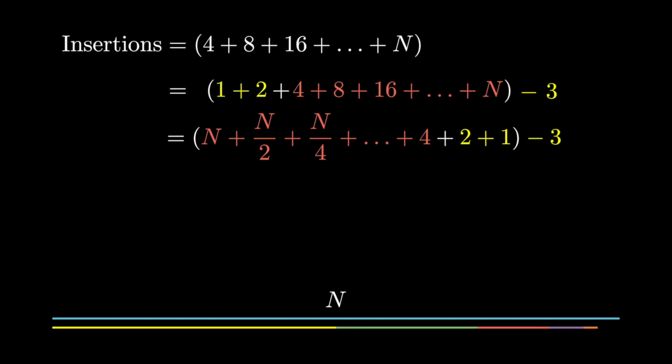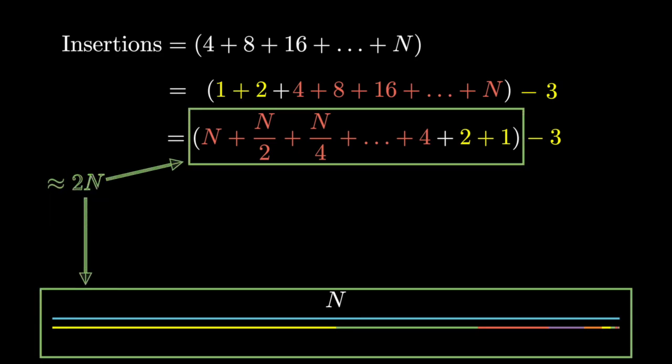Perhaps, to your surprise, even if we continue to do this until we reach one element, we never quite match the size of the original line. So one cool approximation to the sum is that our total number of insertions can never be more than 2n. If you're more mathematically inclined, you can get a similar result by simplifying the sum using the geometric sum formula.